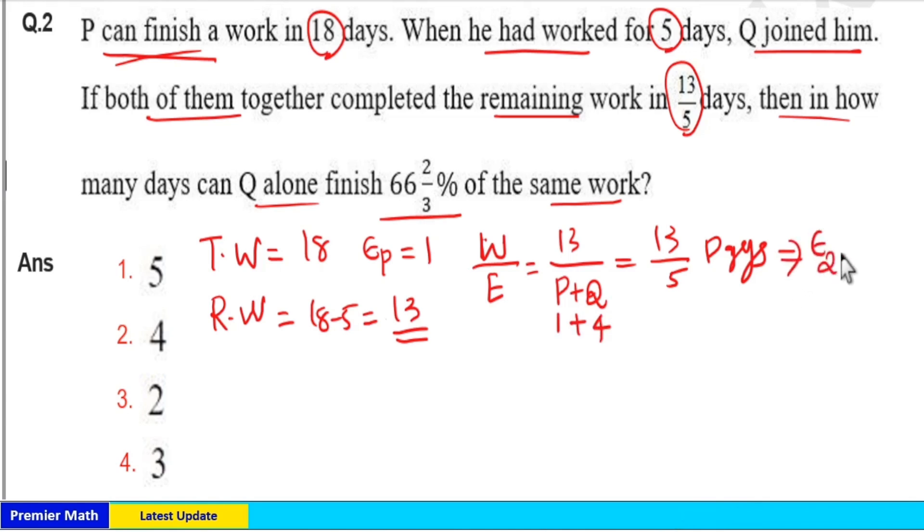So from this we got efficiency of Q as 4 units. Now we have to find in how many days Q alone finish 66 and 2 by 3 percentage of same work. 66 and 2 by 3 percentage work means 200 by 3 percentage, which is 2 by 3 work.